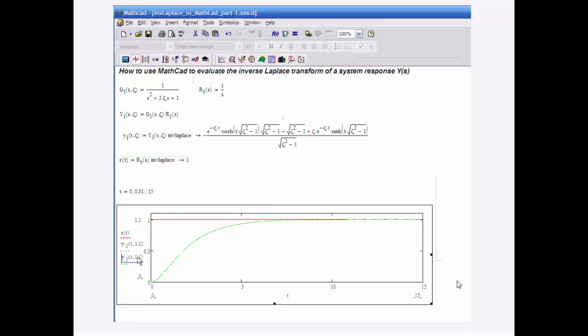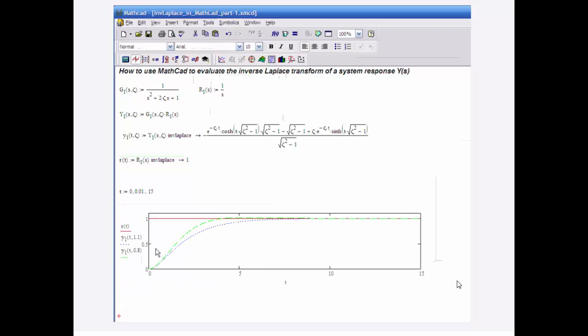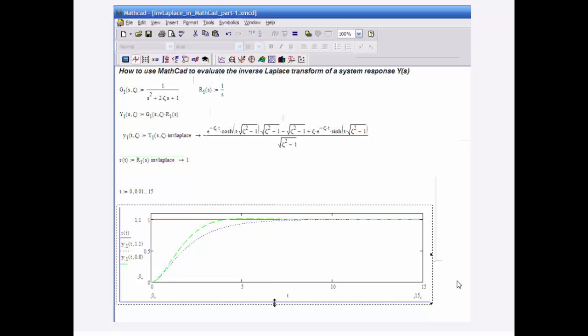Let me put in a different value of zeta. Now let's say that we have a value of zeta of 0.8. We have a little overshoot.